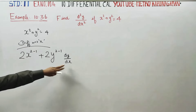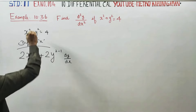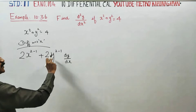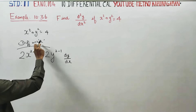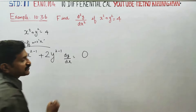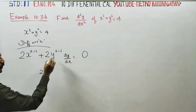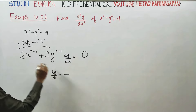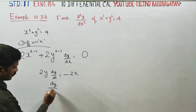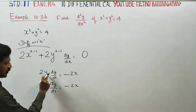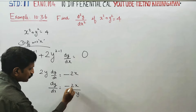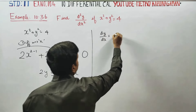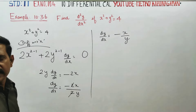Differentiating 4 with respect to x gives zero since it is a constant. So we get 2x + 2y dy/dx = 0. Rearranging, 2y dy/dx = -2x, therefore the first order differentiation is ready: dy/dx = -x/y.